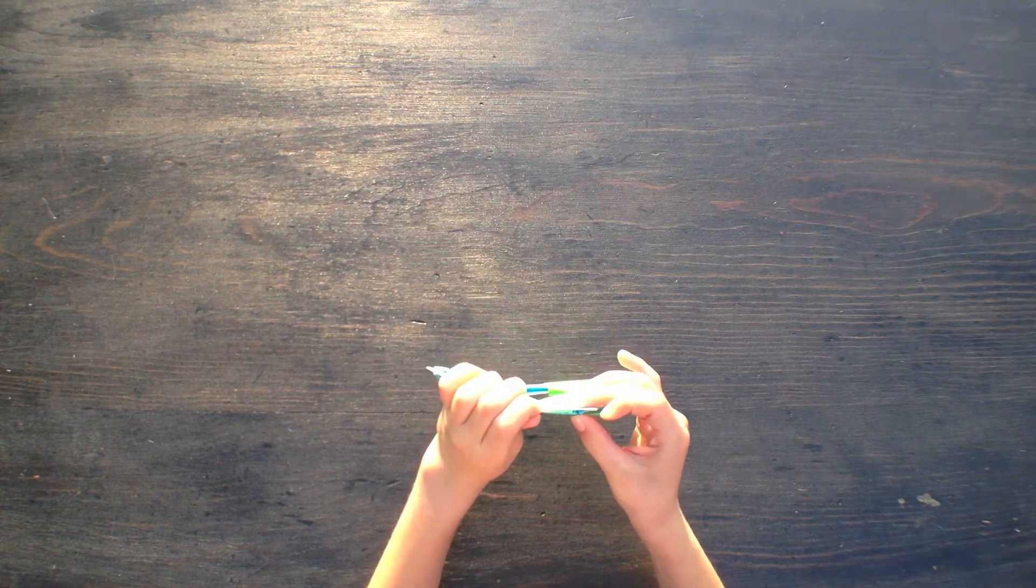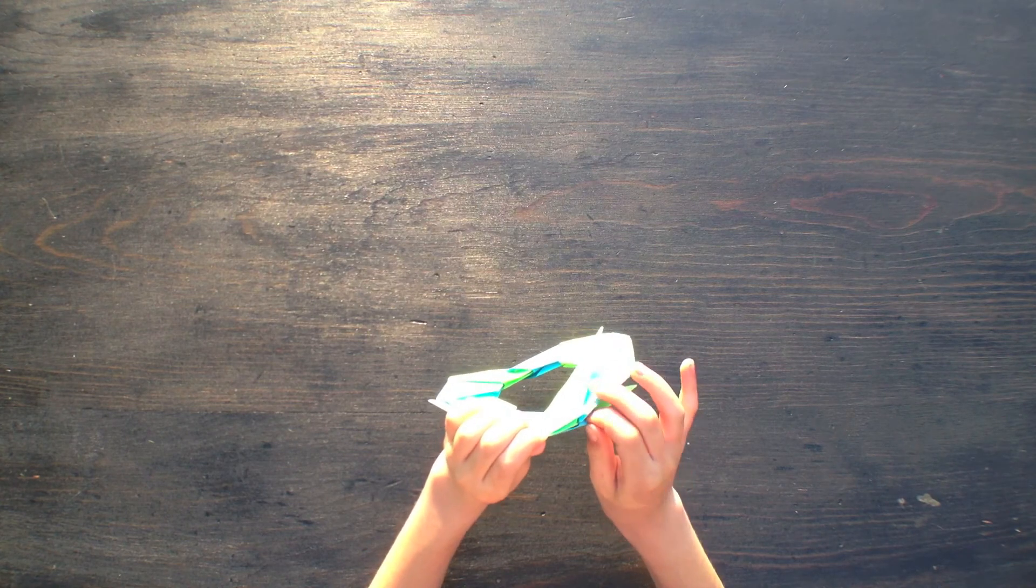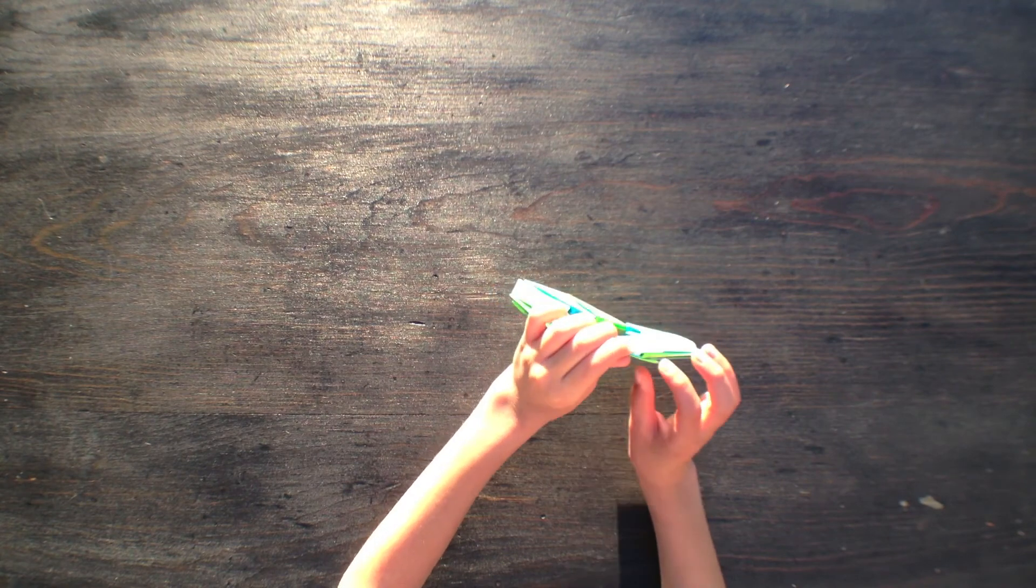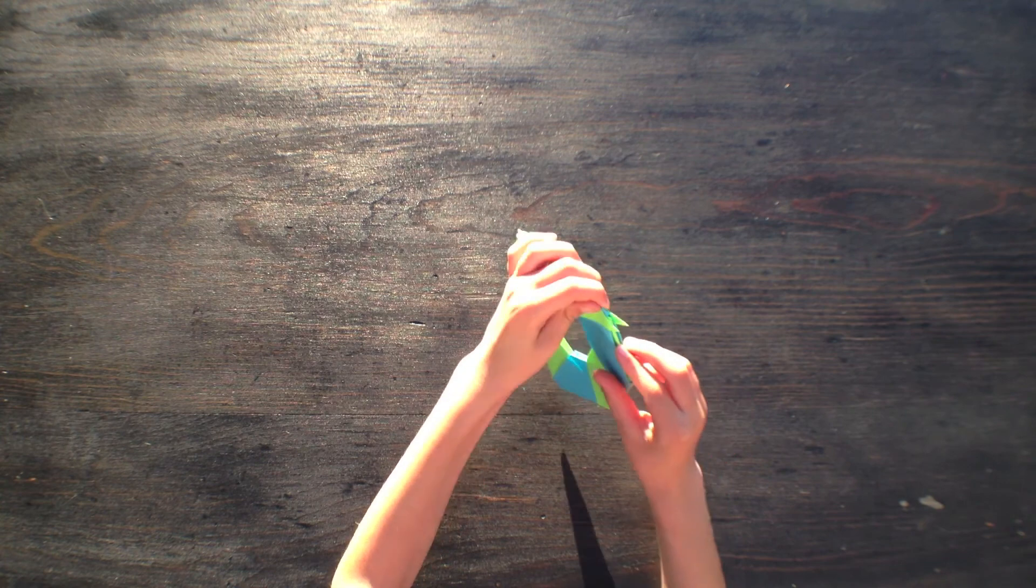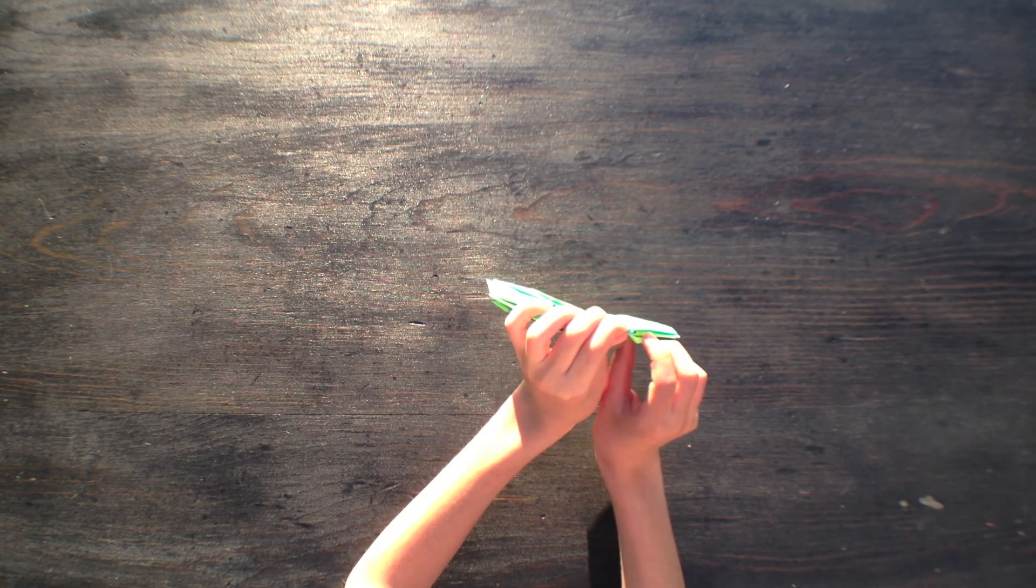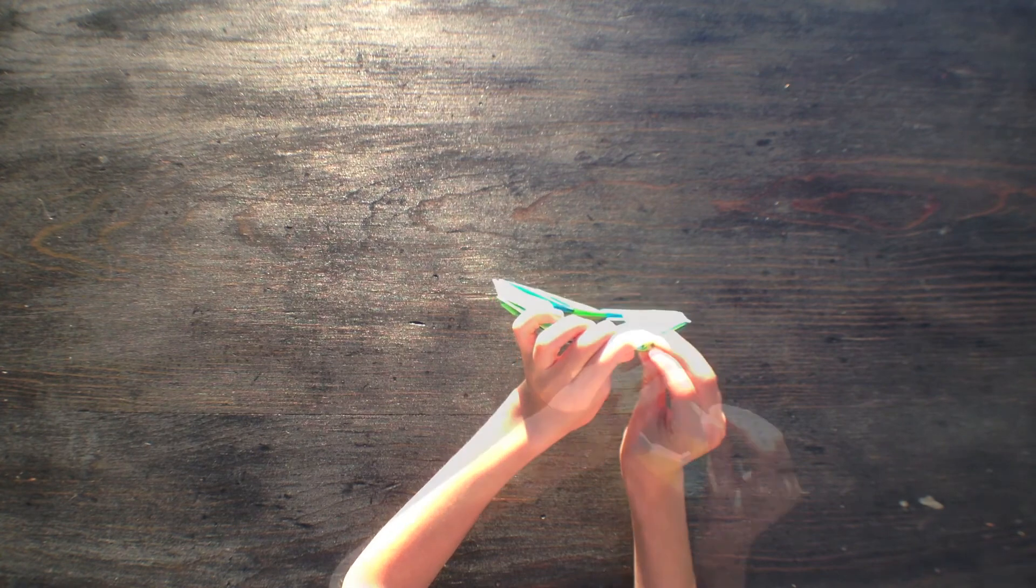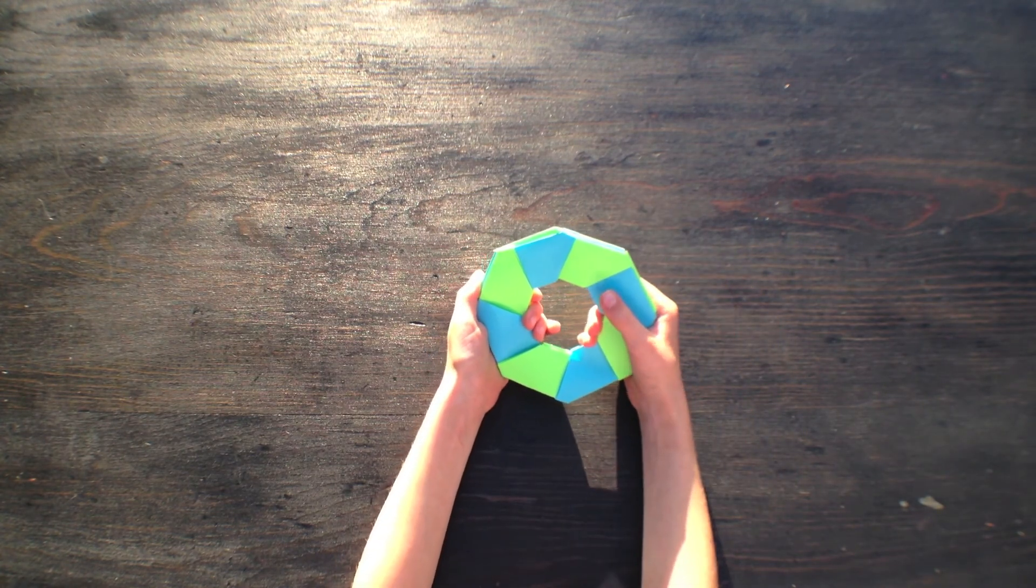You don't want to put it over that or it won't transform very well. Tuck these two corners in and don't put them over this little thing. Put them on either side. And there you go! You got your transforming ninja star.